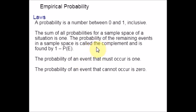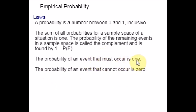The probability of the remaining events in a sample space — that is called the complement — would be 1 minus the probability of that event. The third law is the probability of an event that must occur is 1. If you add all the probabilities, you get 1; if it exceeds 1, you have made a mistake in the calculation. And the probability of an event that cannot occur is 0.